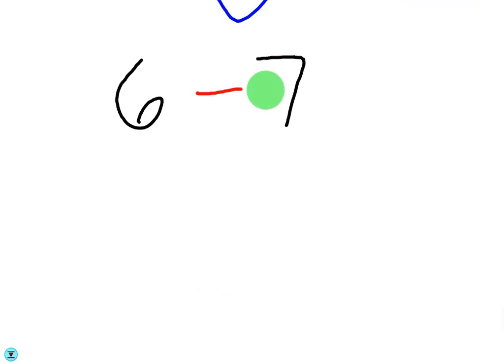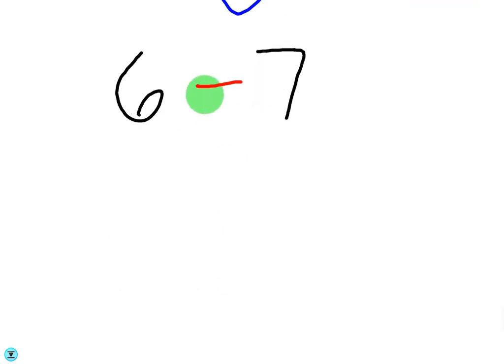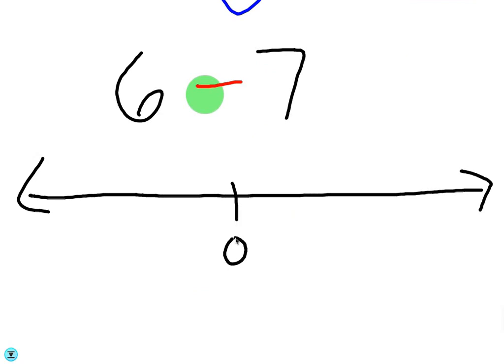Now, if you're not comfortable with adding and subtracting or if you forget the rules, you can always draw the number line. Here's 0, here's 6. If we're taking away 7, we're moving 7 to the left: 1, 2, 3, 4, 5, 6, 7. What's the number just to the left of 0? It's negative 1. Therefore, 6 minus 7 equals negative 1.